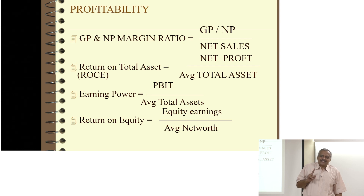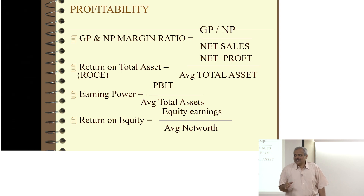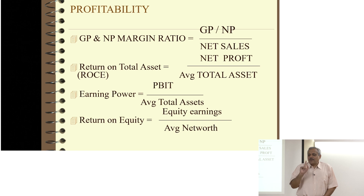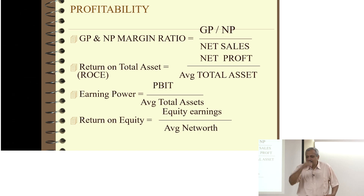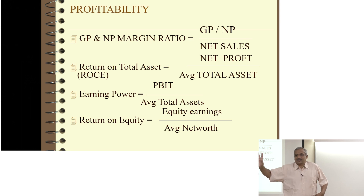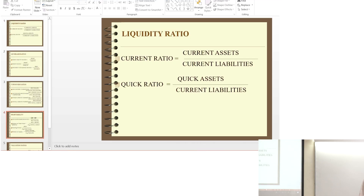One thing you need to avoid: going to moneycontrol.com, typing the company name, finding the P&L and balance sheet and ratios there, cutting and pasting into Excel and dumping it. Do not do that. Because in MoneyControl, the P&L and balance sheet will be adjusted. If you actually pick up the figures from the annual report and calculate, you will never get that figure from MoneyControl. So I can easily make out. Adjusted in the sense - grouping. When we say adjusting, I will come to what that means.